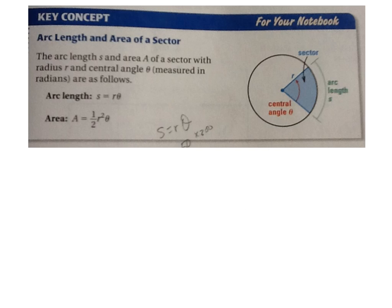The last key concept is on page 861: arc length and area of a sector. Arc length is the length of the arc. The blue region is called the sector, R is the radius, and theta is the central angle made by the sector. To find arc length: S equals R times theta. Area of a sector: one half times radius squared times theta, where theta is the central angle in radians.